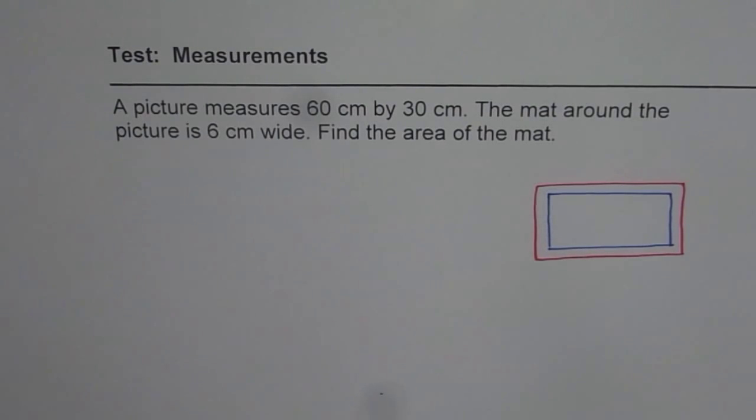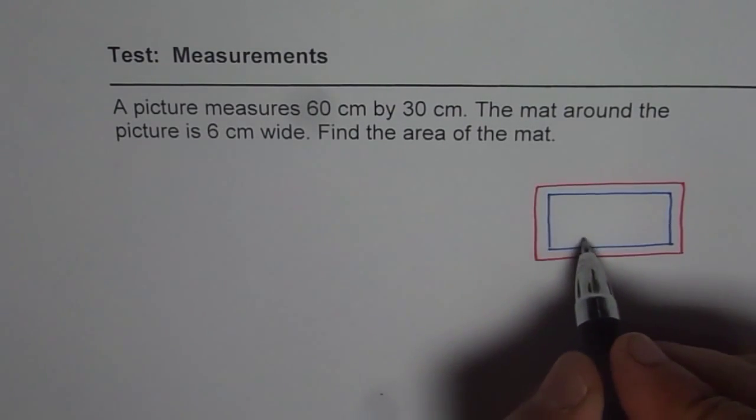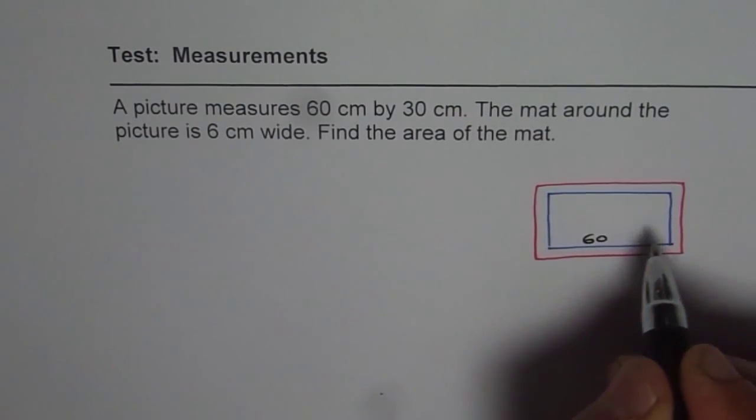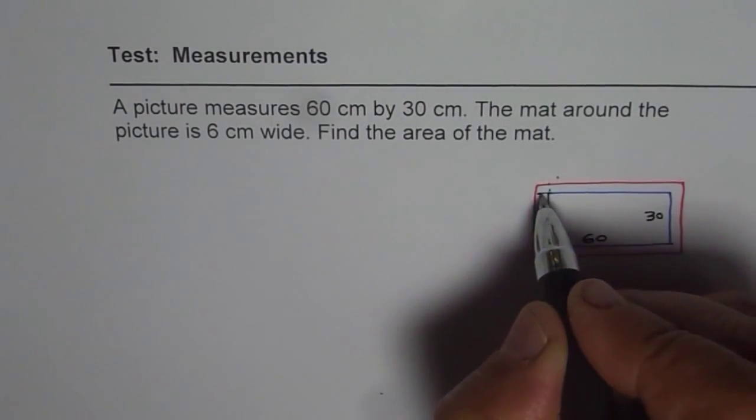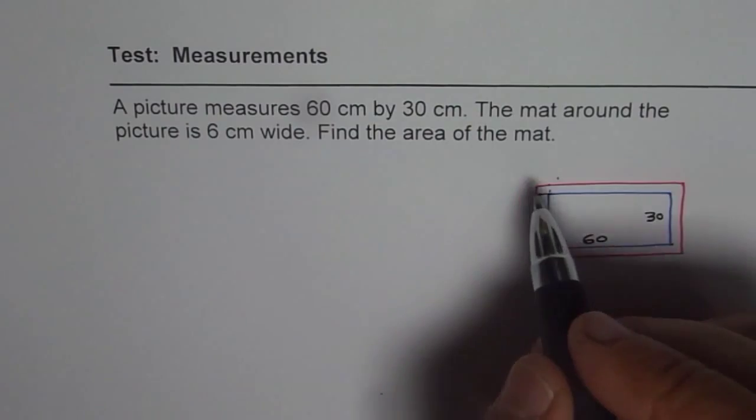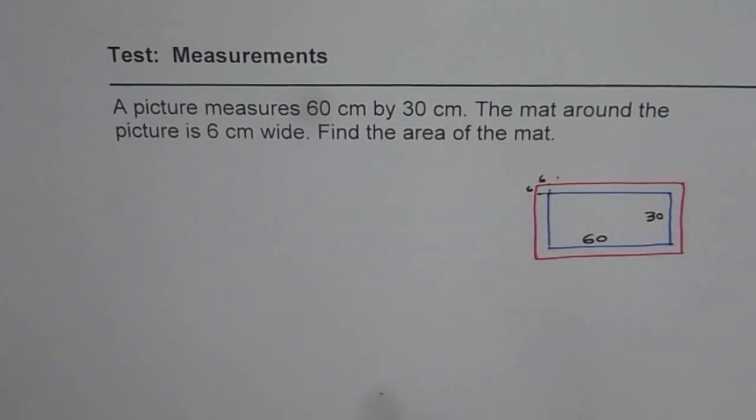So in this particular case, the length of the picture is 60 cm and the width is 30 cm. Now this dimension here, we can say like this here on the corner, this corner is 6 by 6. So this is 6 and this is 6.